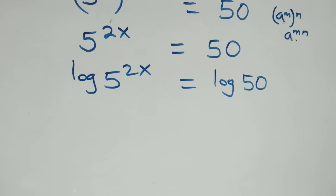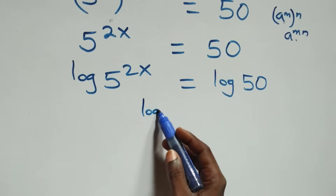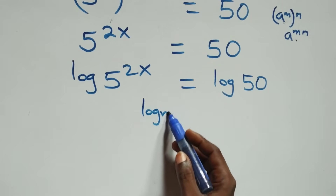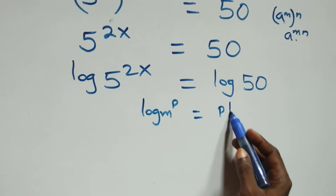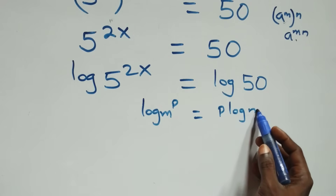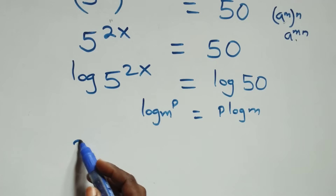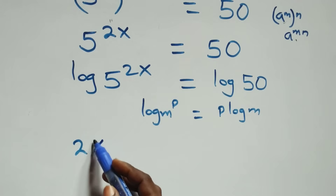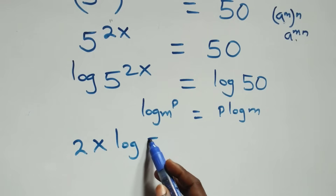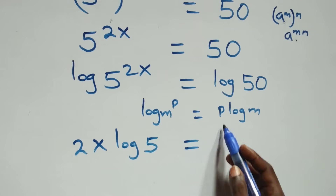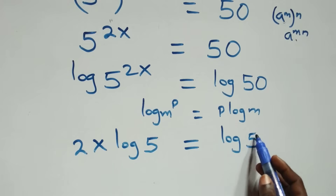The next step here: we apply the power log rule. When we have log m raised to power p, this is the same thing as p log m. So what we have here becomes 2x log 5 equals to log 50.